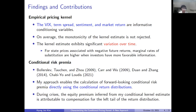Let me first summarize some findings and contributions of this paper. I find that the VIX, term spread, and the market return are conditioning variables that are most informative about the pricing kernel. On average, the monotonicity of the kernel estimate is not rejected. The kernel estimate exhibits significant variation over time. For example, for state prices associated with negative future returns, the marginal rates of substitution or discount factor are higher when investors have more favorable information about the future market, for example by looking at the low VIX.